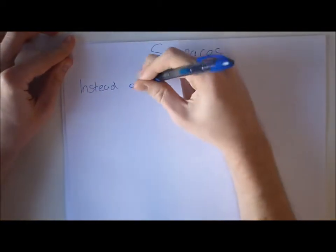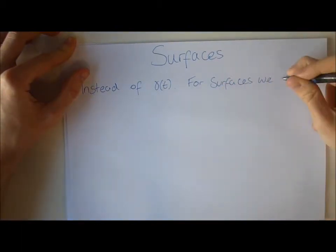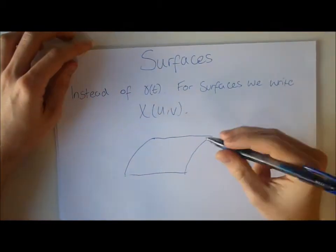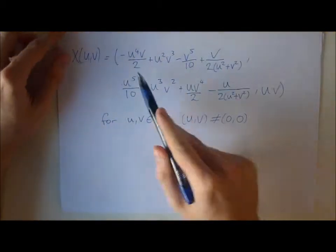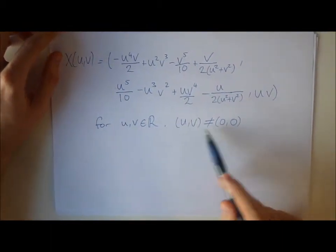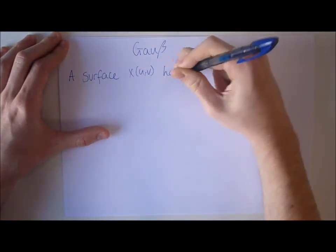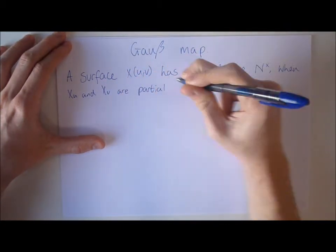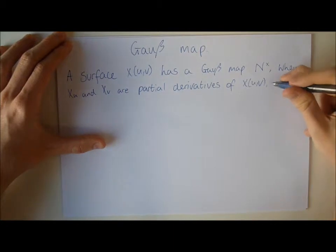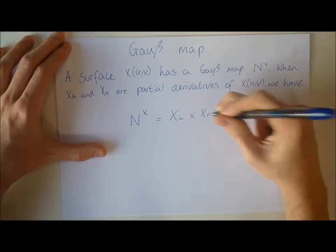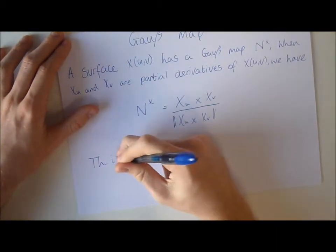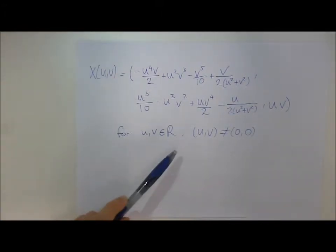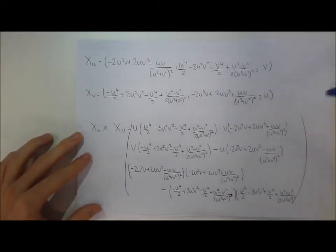Now we will talk about surfaces. Instead of gamma(t) we can write x(u, v). Surfaces are usually drawn like this. A surface has a Gauss map which is denoted N(x), where u and v are the partial derivatives of x. N(x) is equal to the cross product of x_u and x_v, all over the length of x_u cross x_v. This is normal at every point on the surface. Here we are calculating the partial differential with respect to u and v and the cross product between them both.